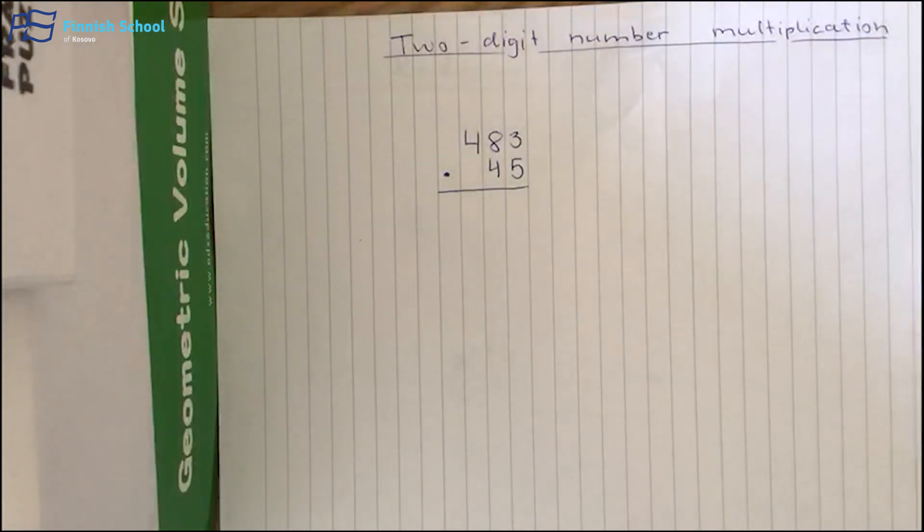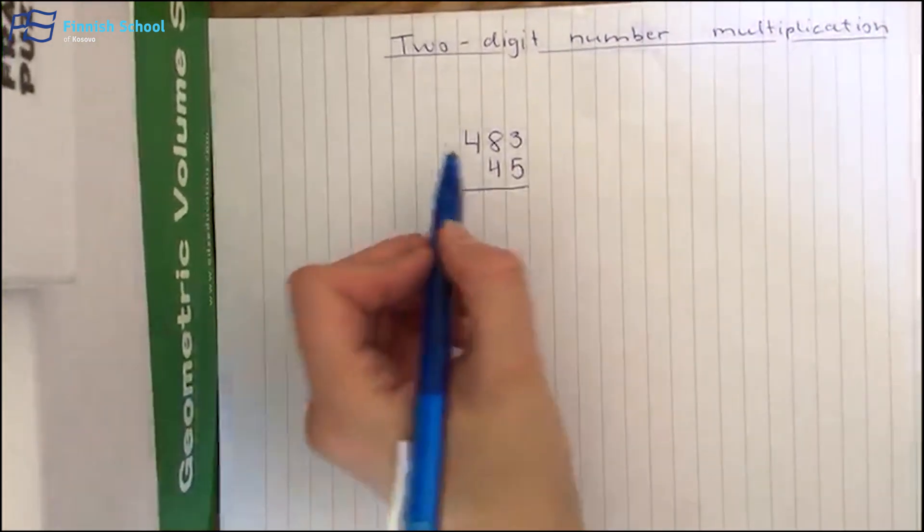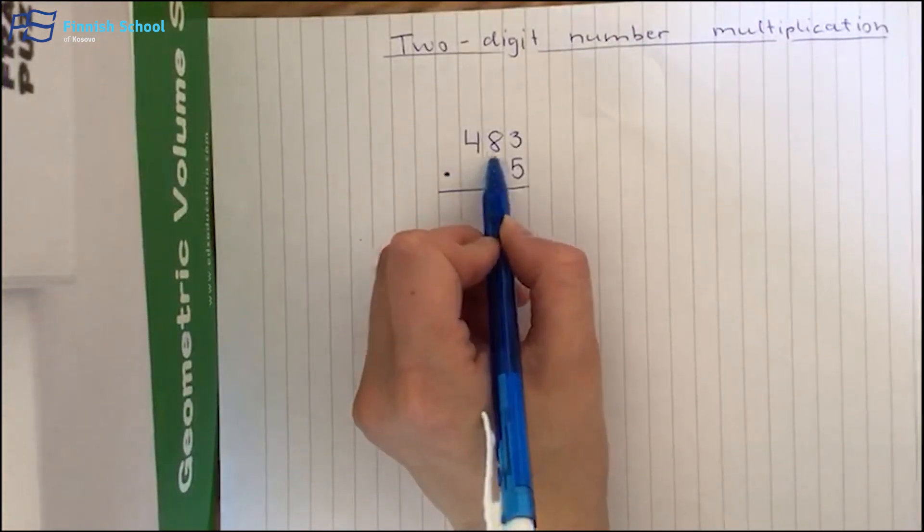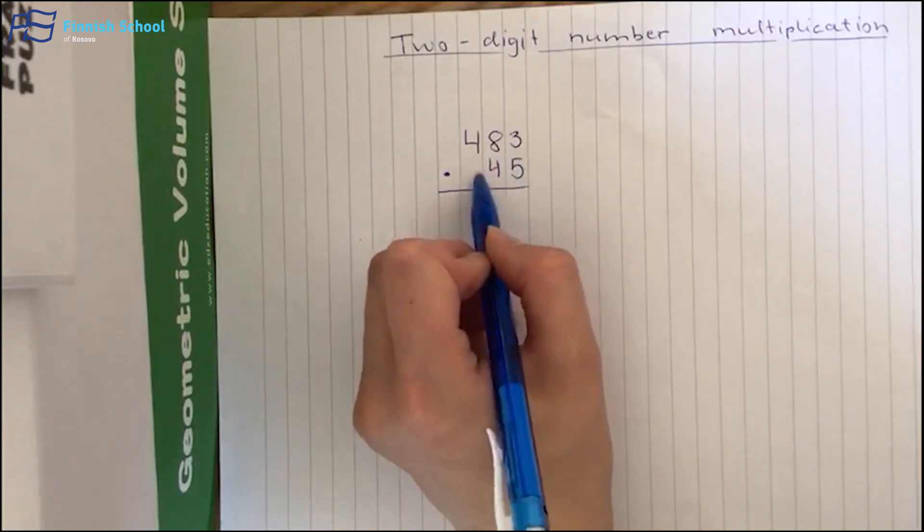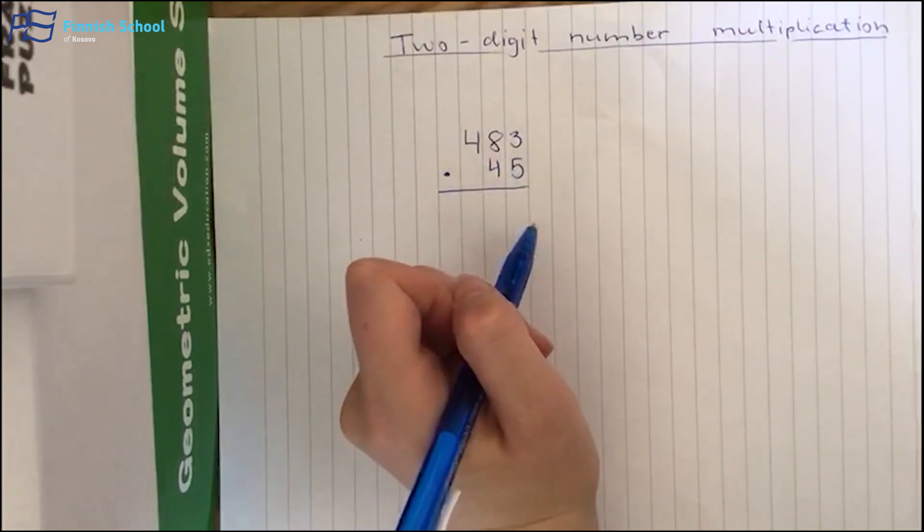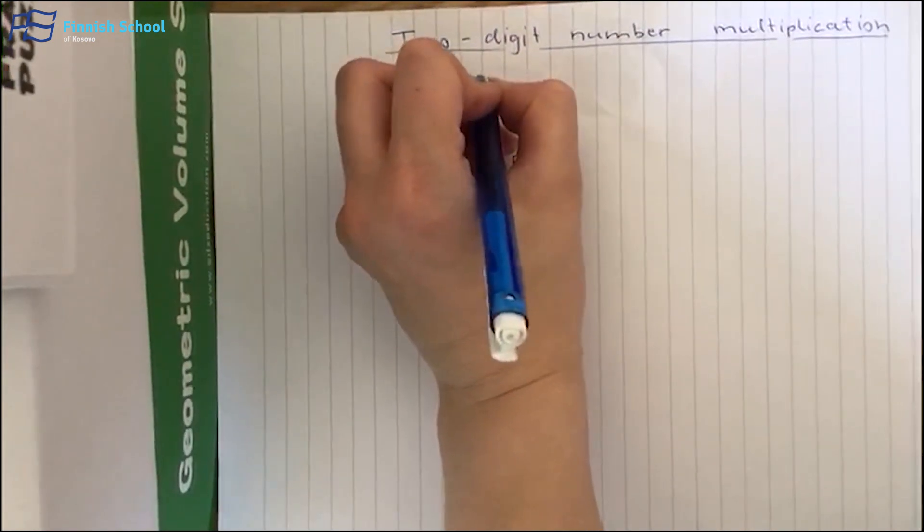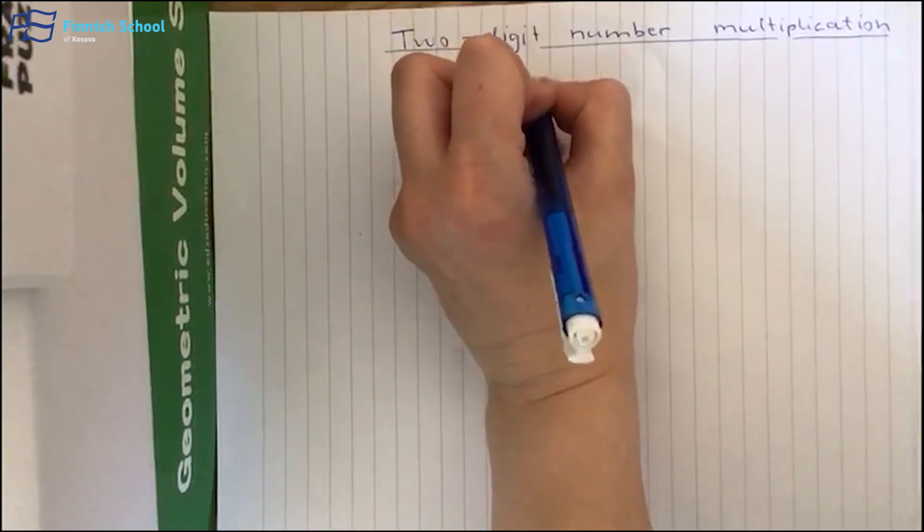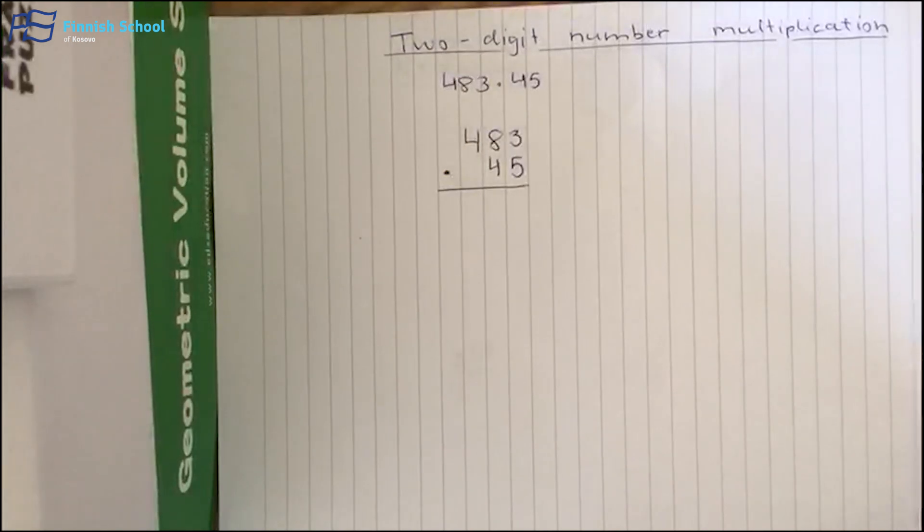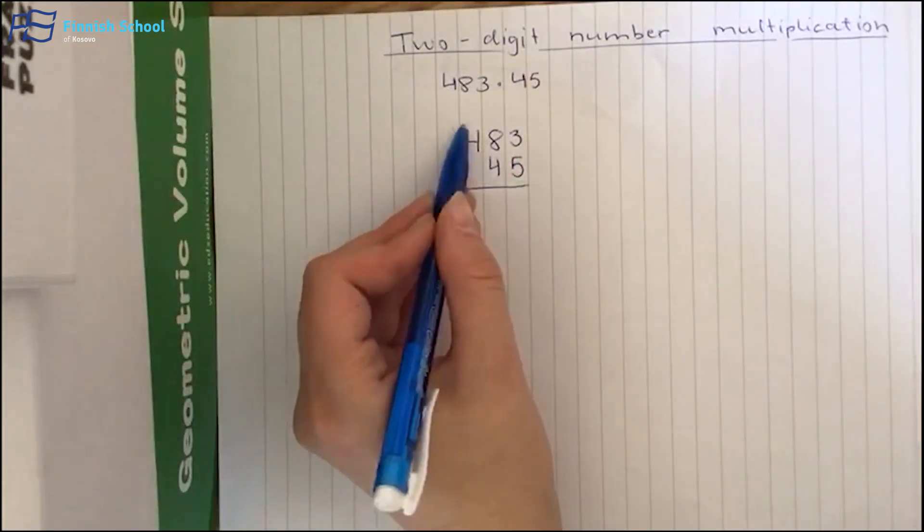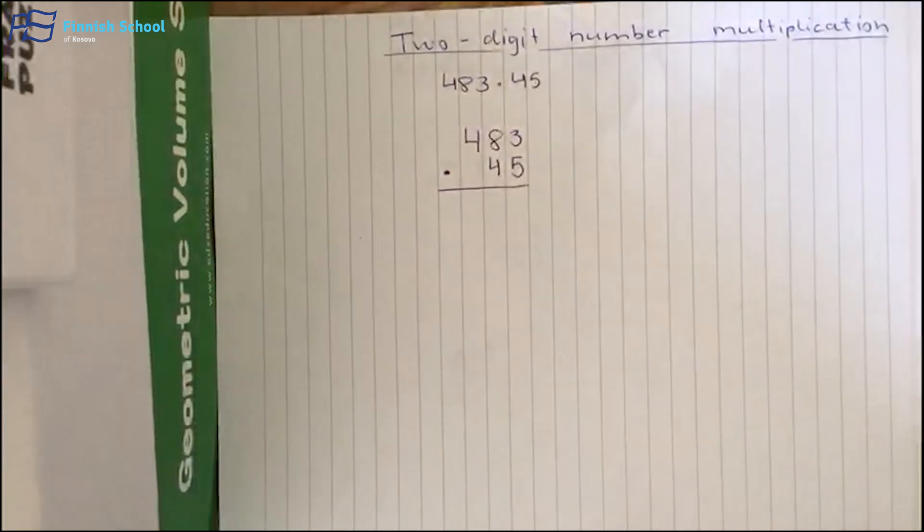Today you're going to learn about two-digit number multiplication. So it means that when we are multiplying, we are multiplying with two numbers. So here our multiplication is 483 times 45, and you put it like this. Let's start.